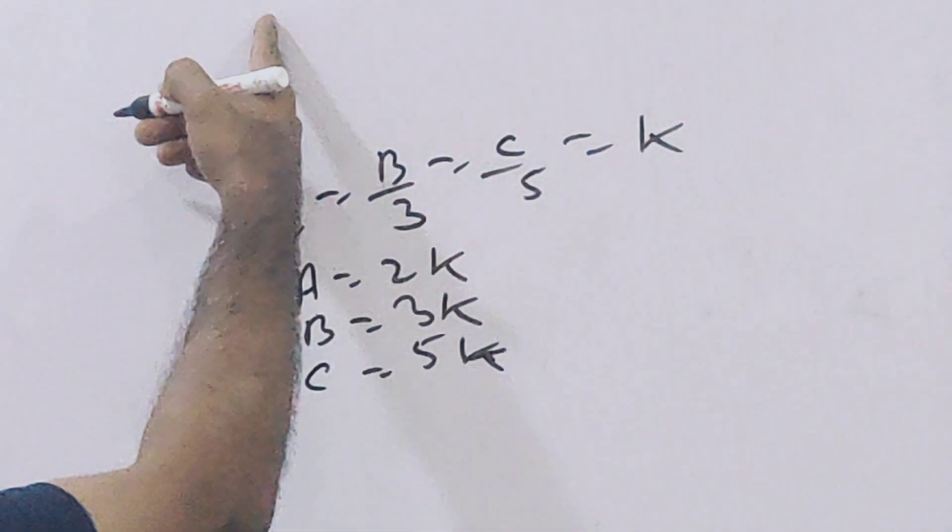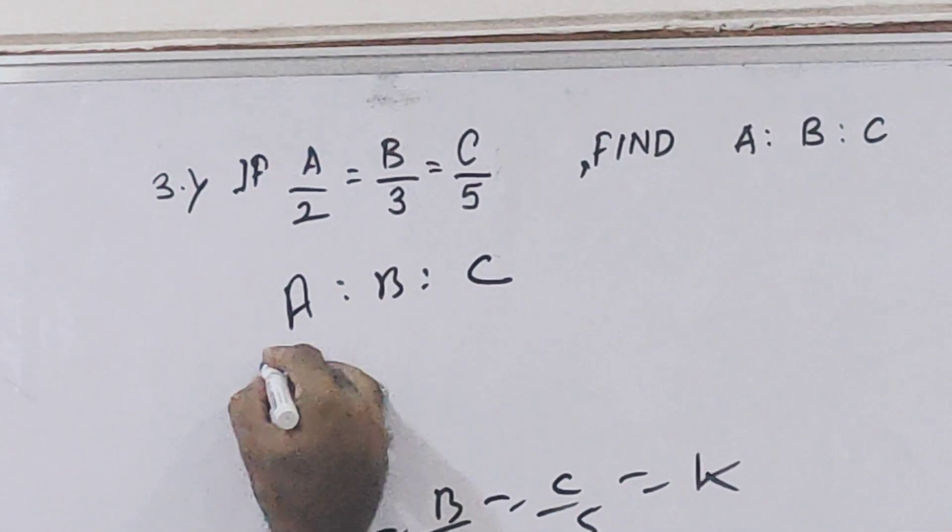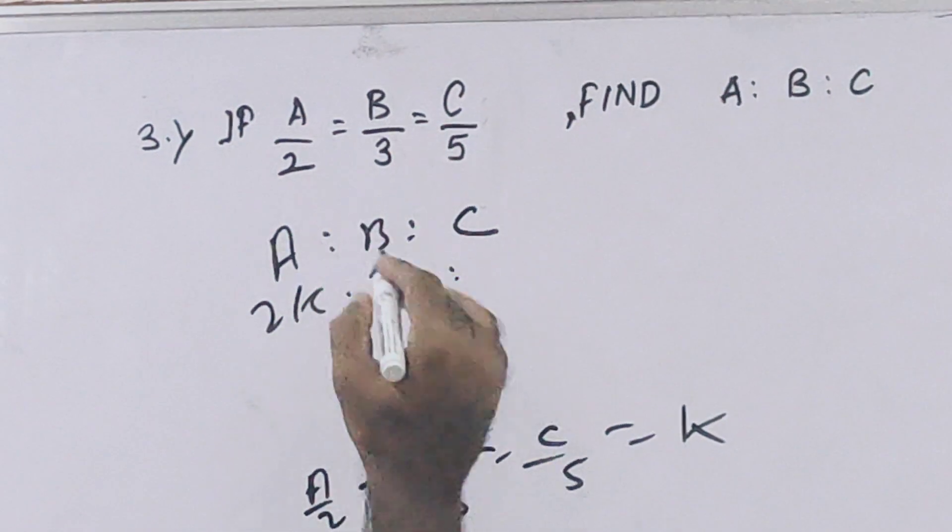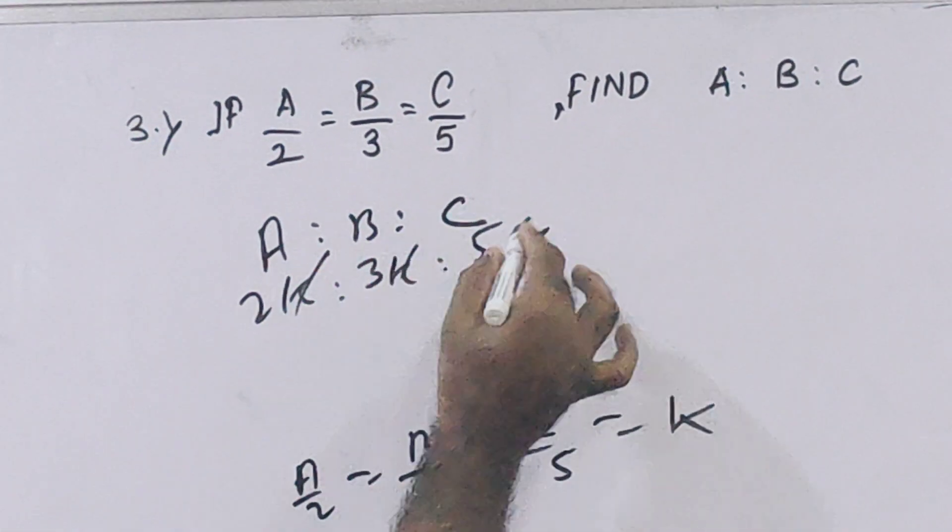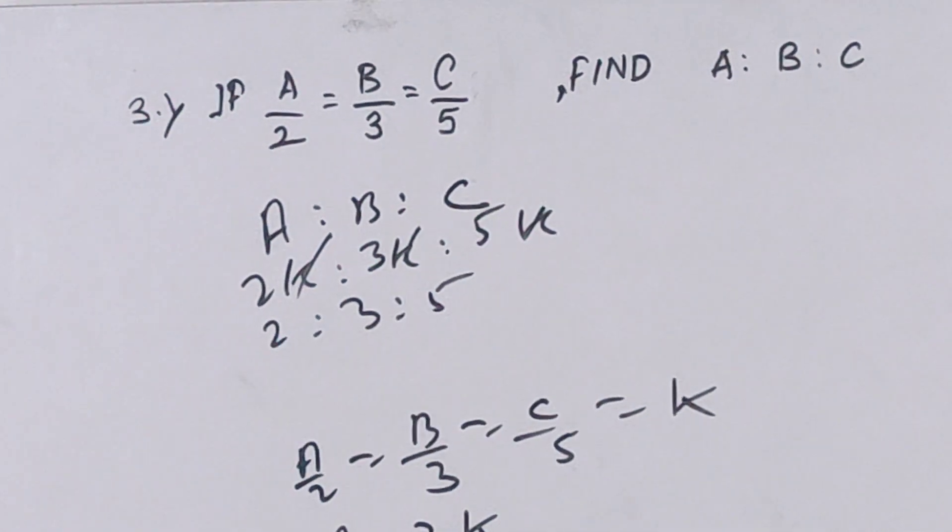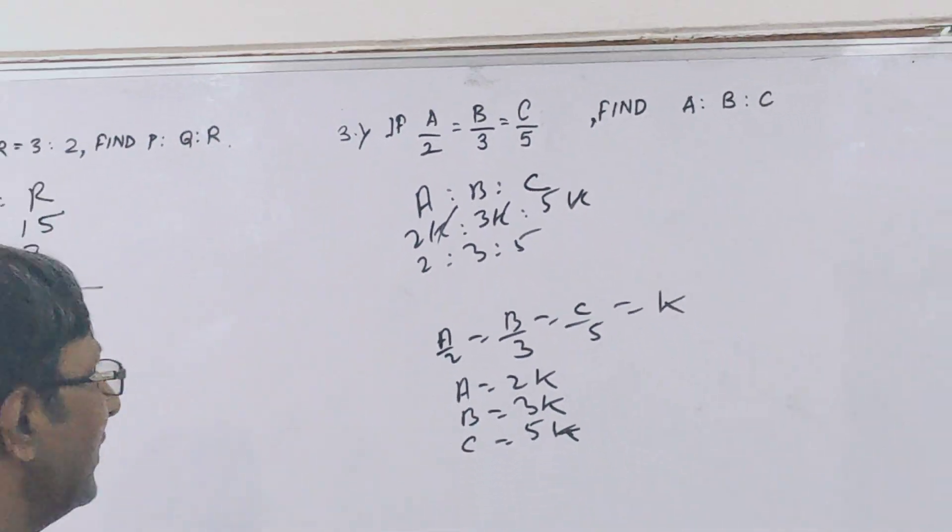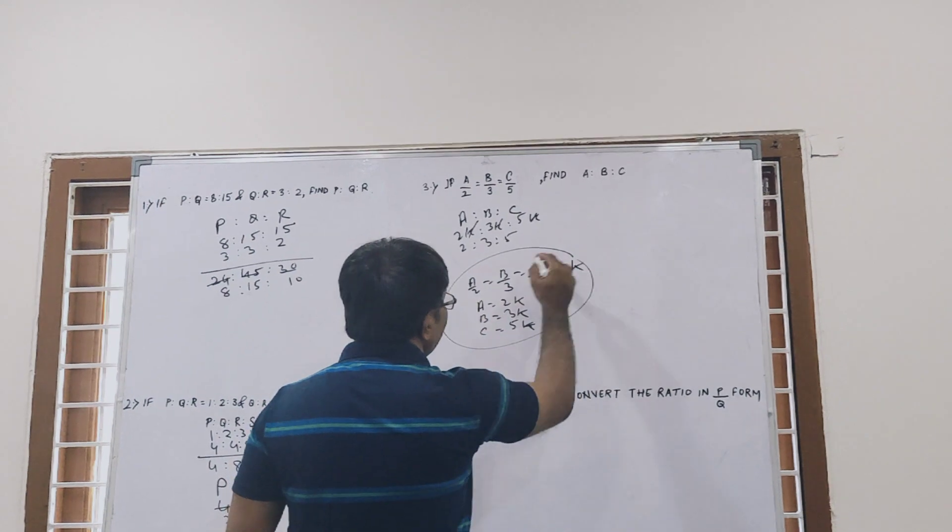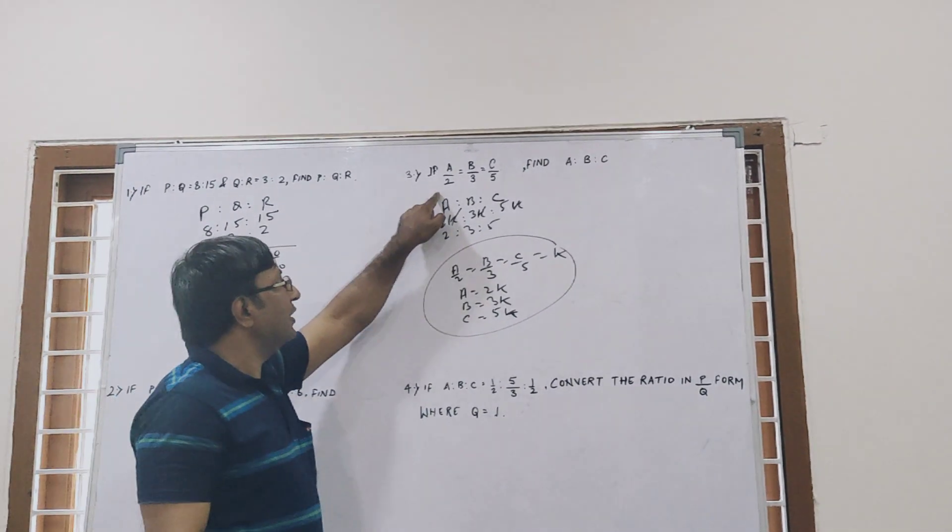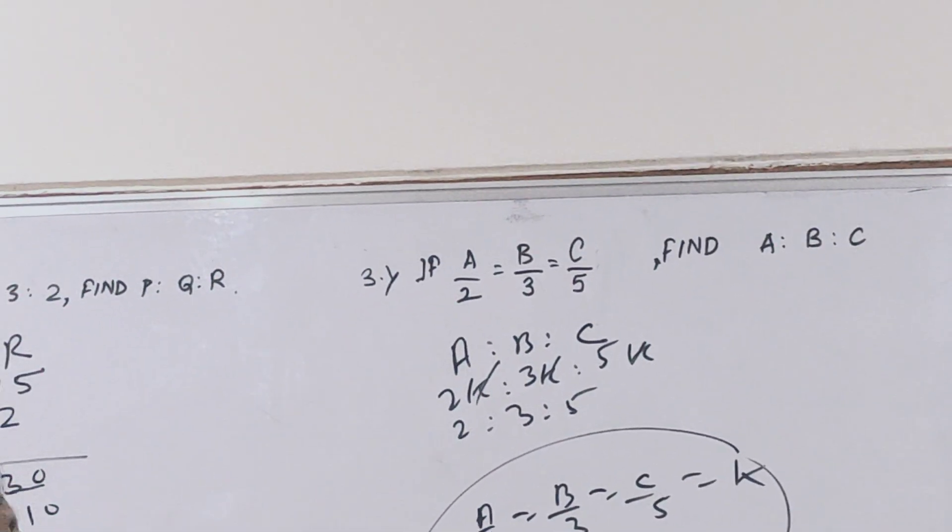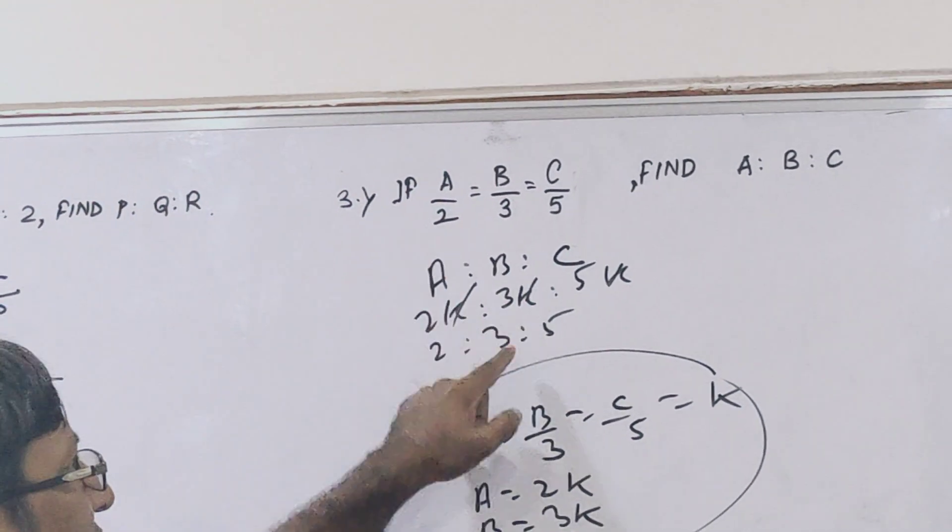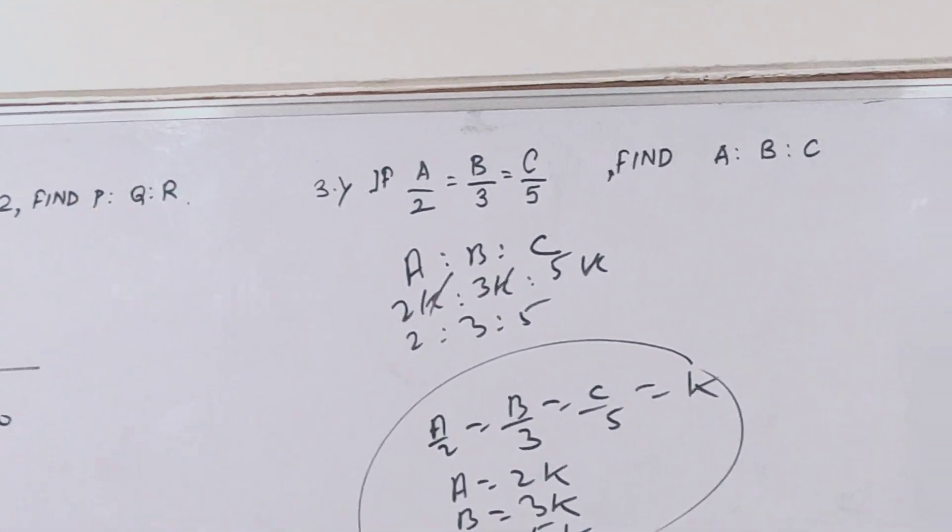We have to find A ratio B ratio C. So A is 2K, B is 3K, and C is 5K. Now the K cancels, so your answer is 2, 3, 5. In this type of question no need to do all this—this is only for understanding. You can write directly: if A by 2, B by 3, C by 5 is equal, then A ratio B ratio C is simply 2 ratio 3 ratio 5. This is the shortcut.